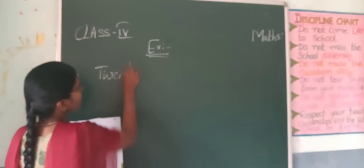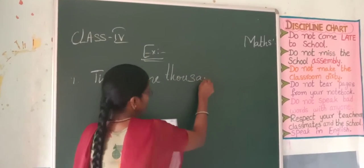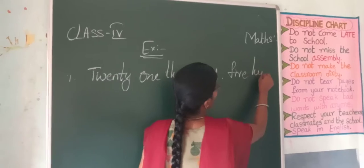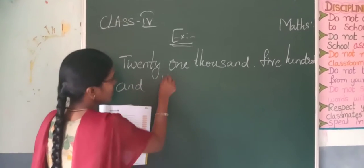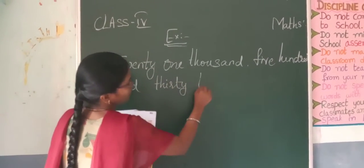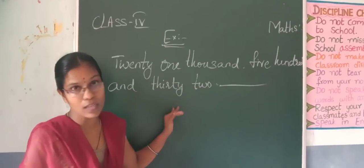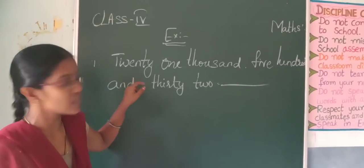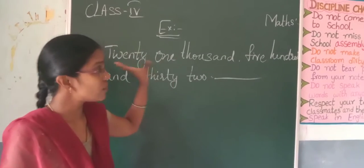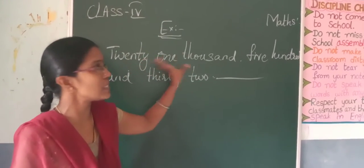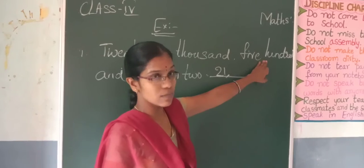First one: 21,500 and 32. See here — figures in the number names. So what we have to do now, we have to be writing the figures. See what he's given for you first: 21,000 and 500, and 32. So 21,000 means there in the thousands place.